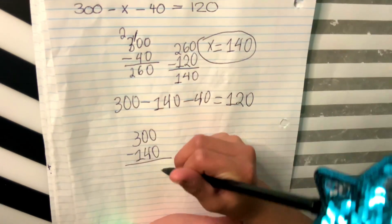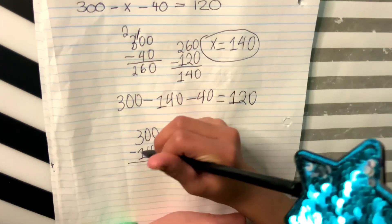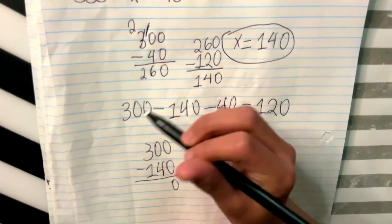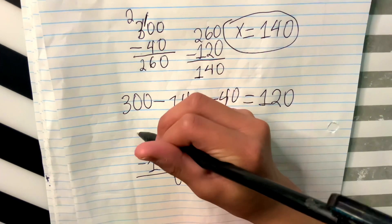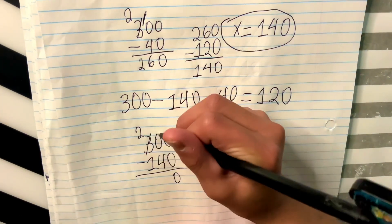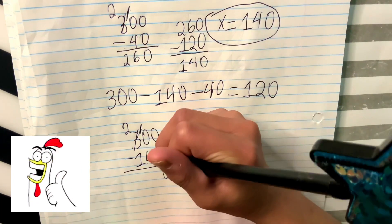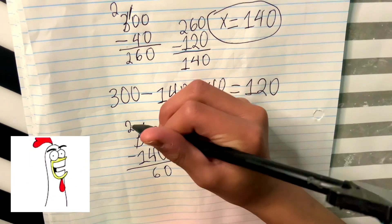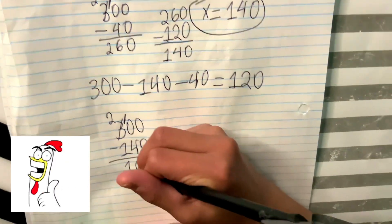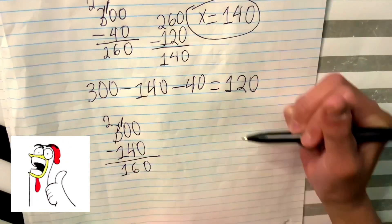So 0 minus 0 is 0. 0 minus 4 you can't do. So go borrow from your neighbor. And take away 1 is 2. So then you're going to have the 1 turned into 10. So 10 minus 4 is 6. 2 minus 1 is 1. There.